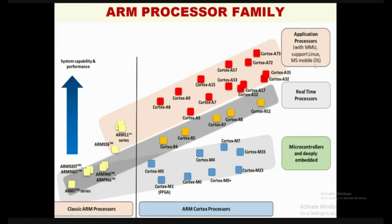The Cortex-A series supports mobile OS and includes a memory management unit. The Cortex-R series (real-time processors) is meant for safety-critical applications — anti-lock braking systems (ABS), airbag systems, and security systems. The Cortex-R series includes R4, R5, R7, R8, and R52. The Cortex-M series processors are meant for microcontrollers, dedicated for developing embedded applications as well as Internet of Things applications.